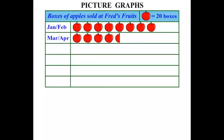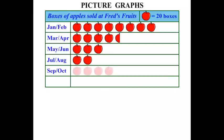One looks like it's been cut off there. Then we have May and June, July and August, September-October, and November-December.